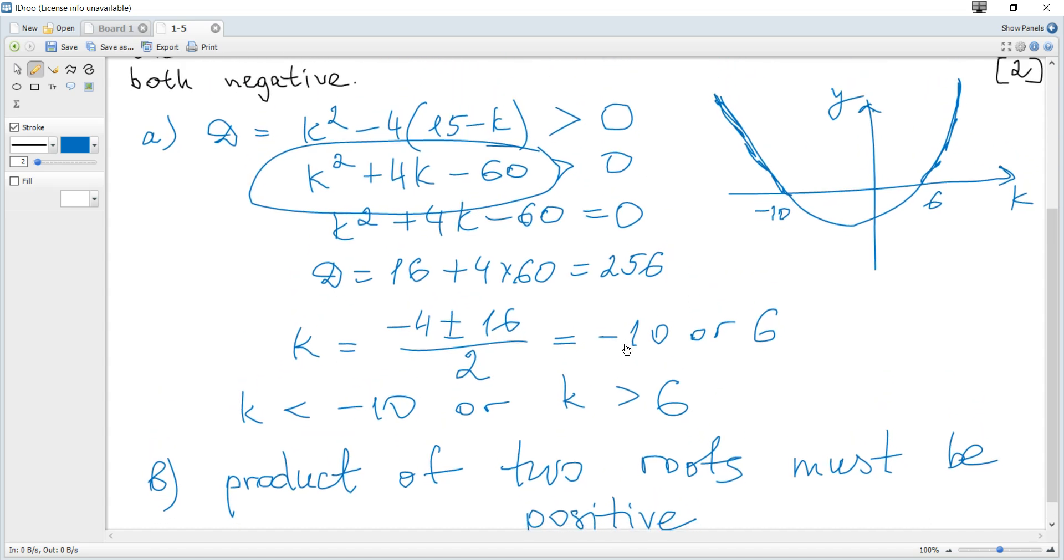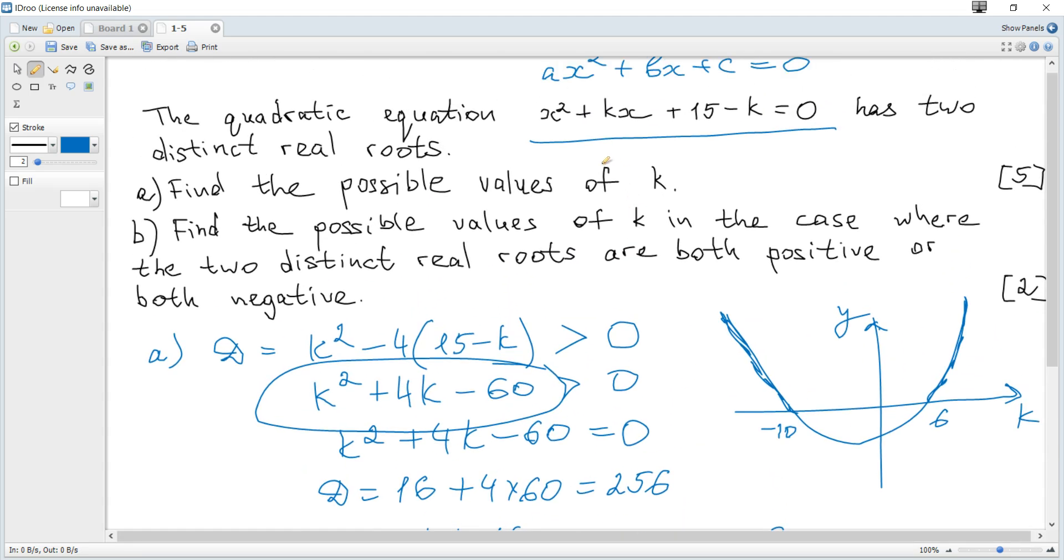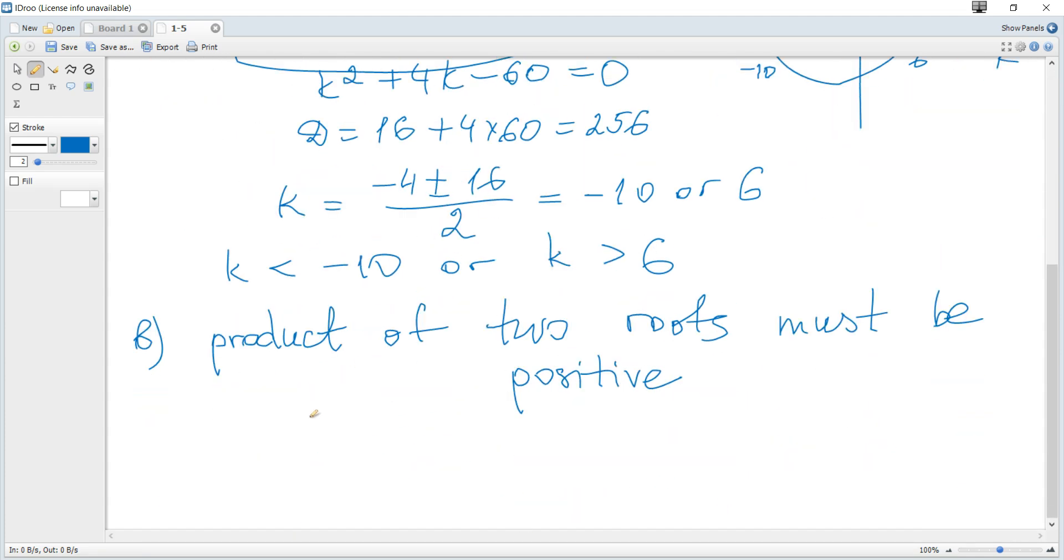Again using the sum and product rule, sum is -b/a and product is c/a. So c/a is just 15 - k, which must be strictly greater than zero.